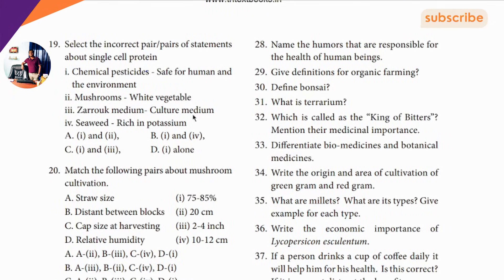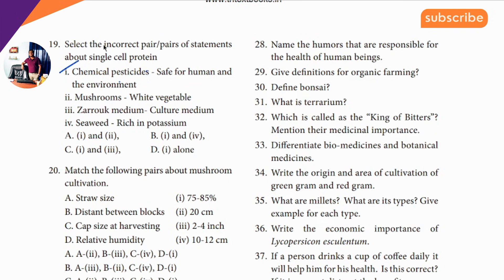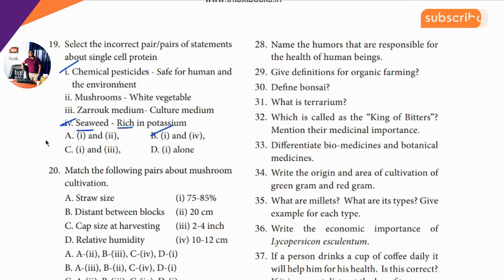Nineteenth question: select the incorrect pair — chemical pesticide safe for human. So chemical pesticide safe for human — so one and four is the answer.